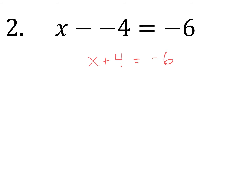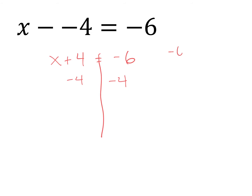To solve this, if I picture my hanger, I would have an X and a 4 on the left side, and then a negative 6 on the right side. I know I need to remove the 4, so I do that through subtraction. But whatever I do to one side, I have to do to the other. So now on the right side I have negative 6 minus 4. If we rewrite that as addition, it's negative 6 plus negative 4. Since the signs are the same, we're going to add them, and since they're both negative, it's going to be negative 10. Therefore, 1X is equal to negative 10.